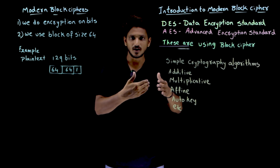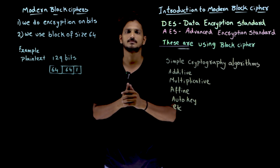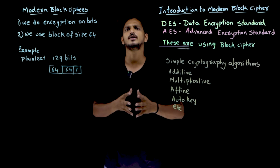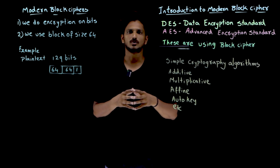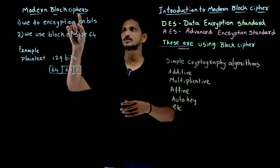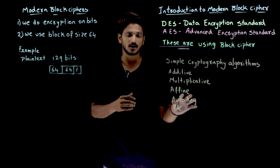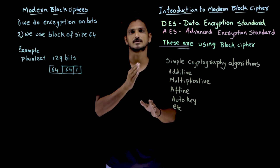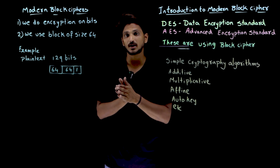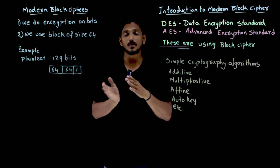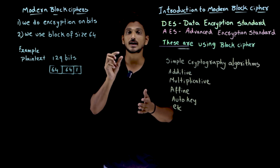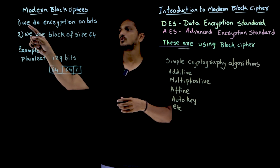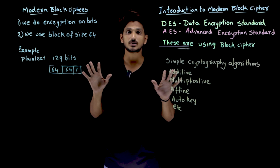In order to create a complex system, we need some logics. Those logics will be discussed in our coming 5 to 10 classes. If you understand the next 5 to 10 classes, understanding DES and AES becomes very very easy. Now coming to the concept of block cipher: in our previous classes, techniques like additive and multiplicative were based on characters — substitution, transposition, or a combination. But in modern block ciphers, we do encryption on bits, not characters.